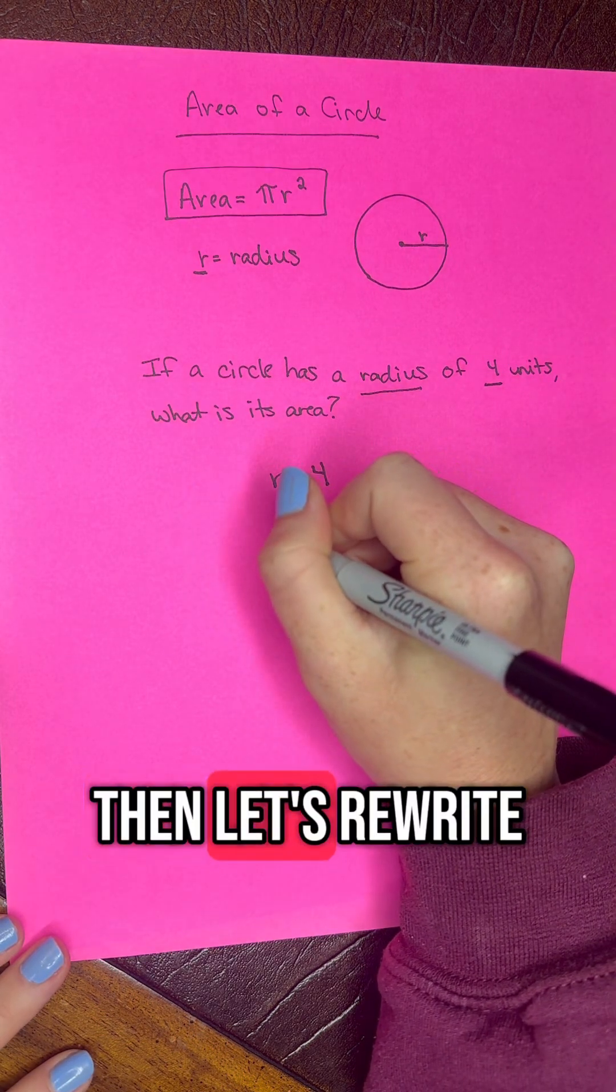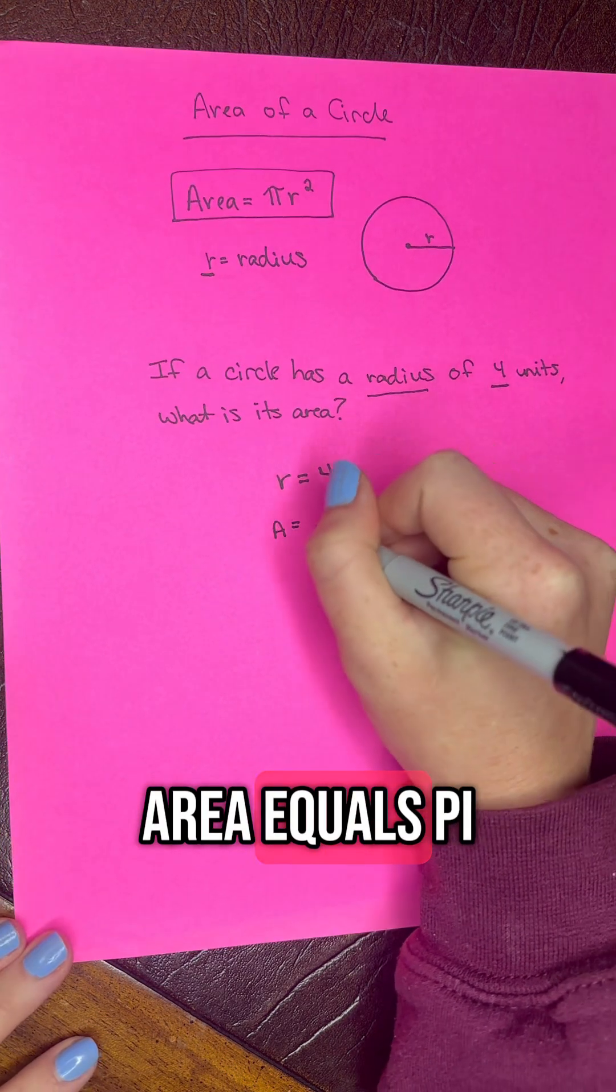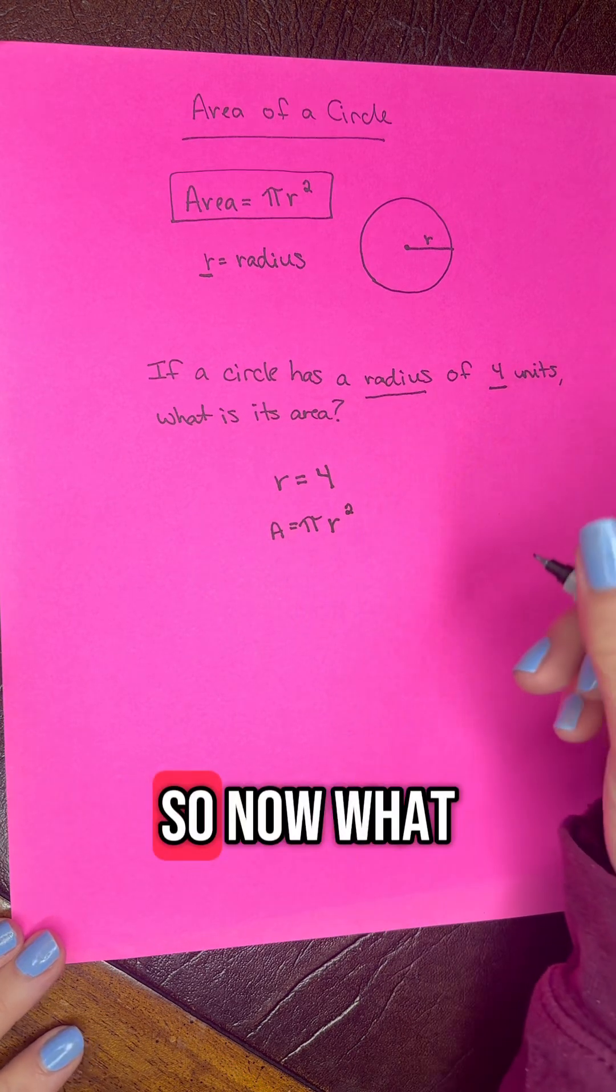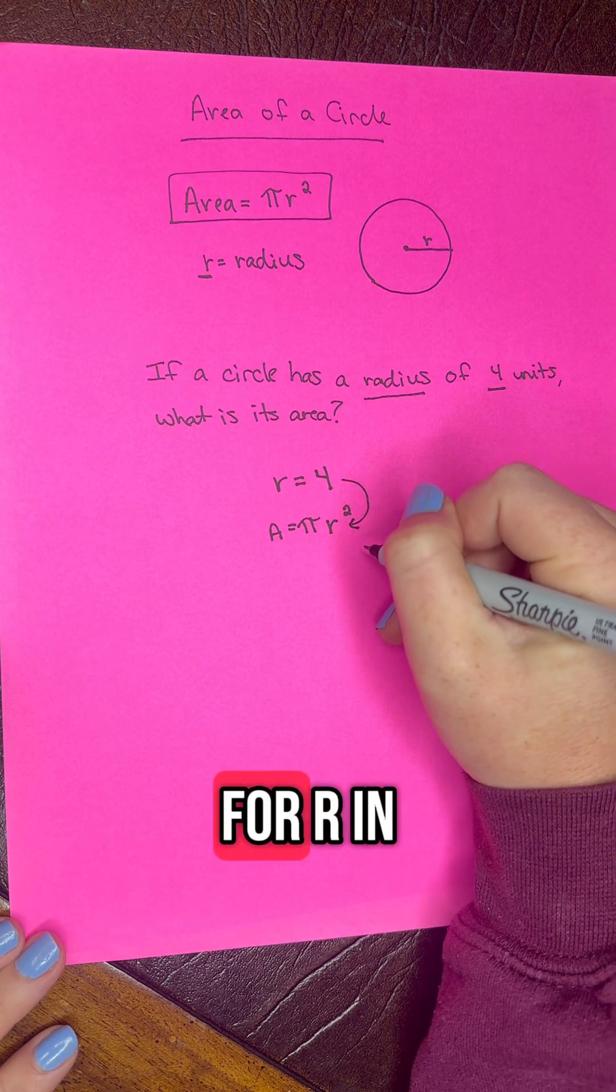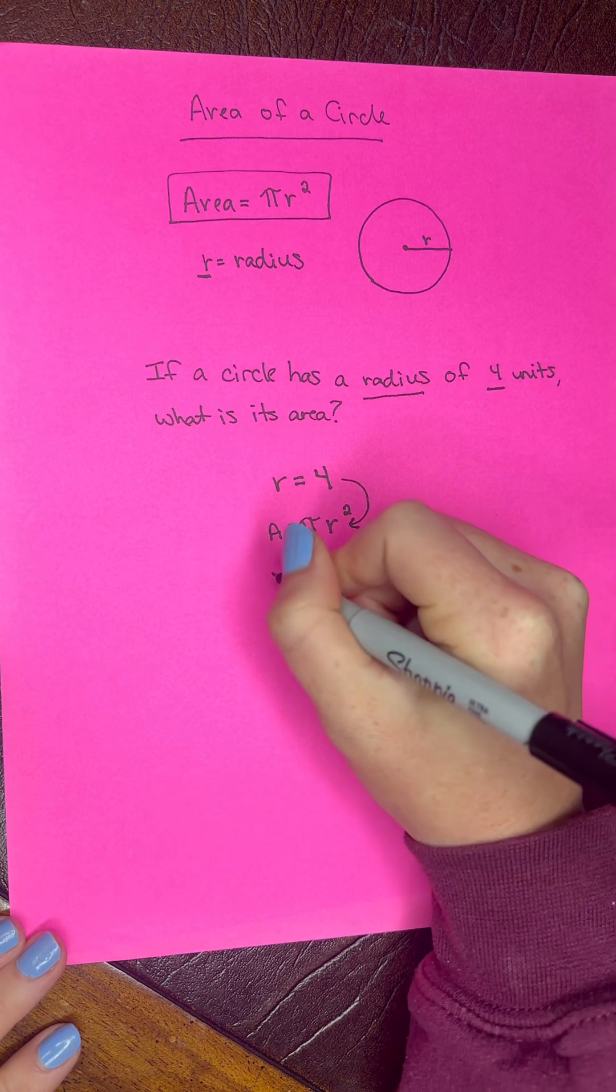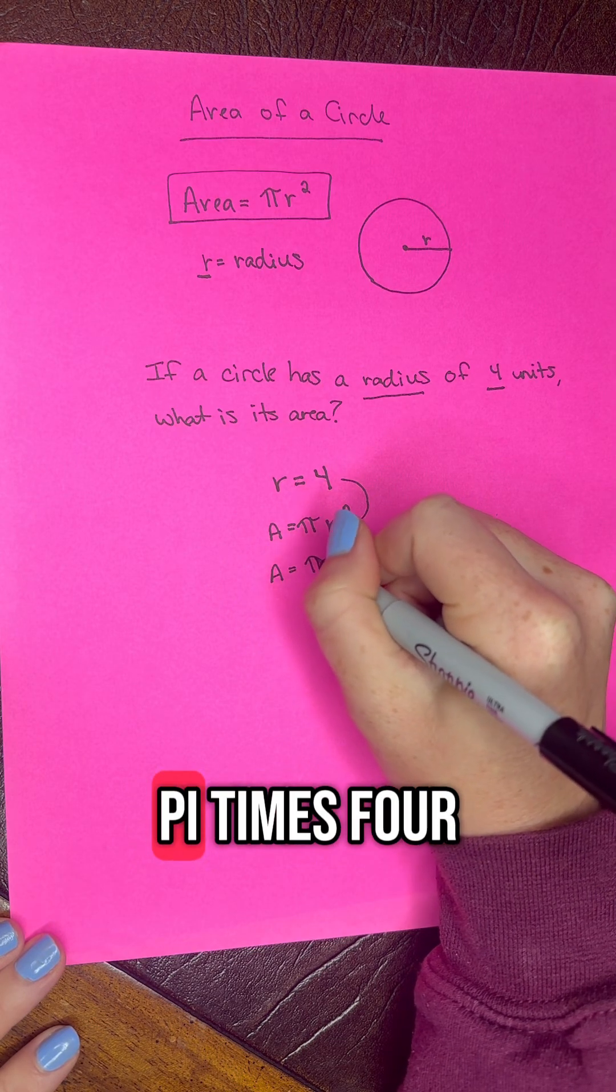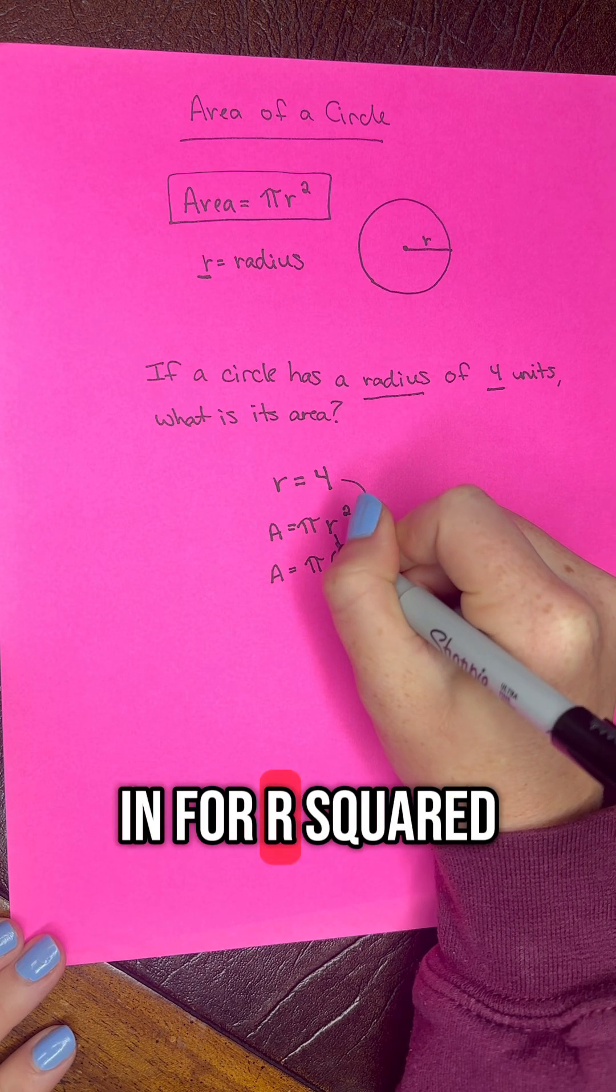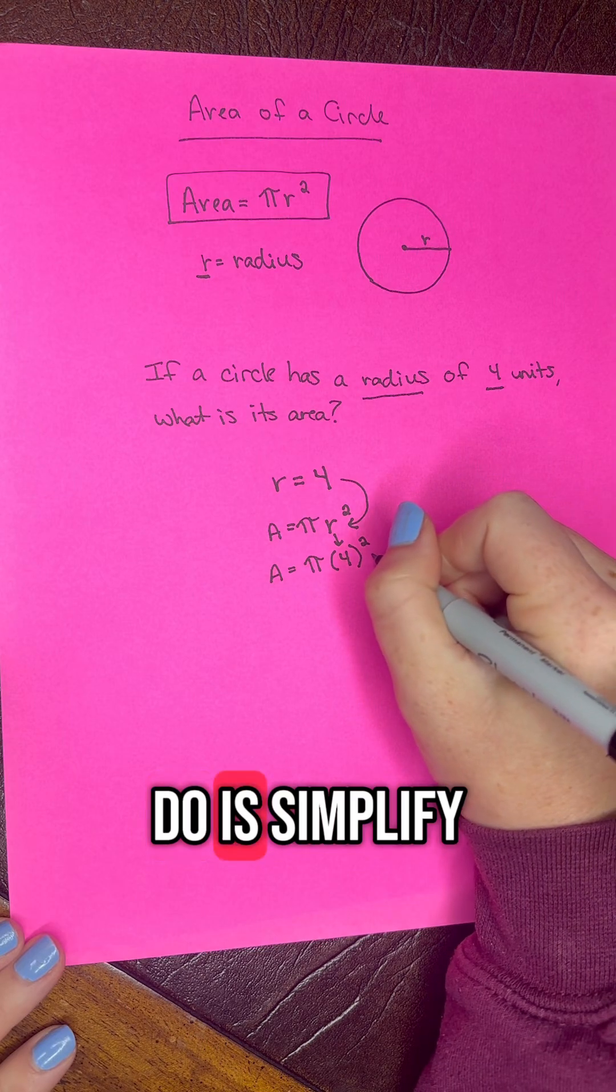Let's rewrite our equation. Area equals pi times radius squared. Now what we need to do is substitute in this 4 for r in the equation. So area equals pi times 4, plugging that in for r, squared. Now all we need to do is simplify.